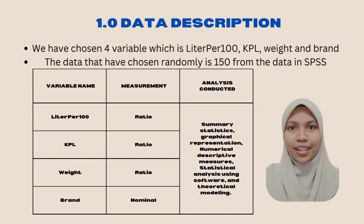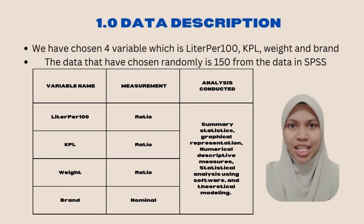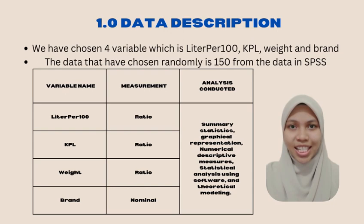In this dataset, we have chosen randomly 150 from SPSS. The measurement of these four variables - liter per 100, KPL and weight - is a ratio measurement, while for brand it is a nominal measurement. There is analysis that was conducted on these four variables. That's all for data description.